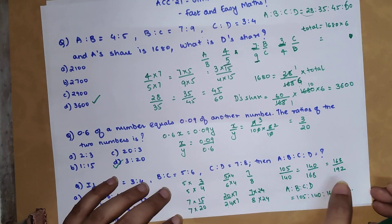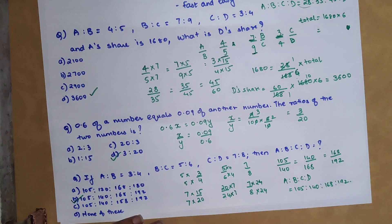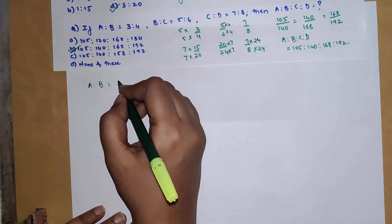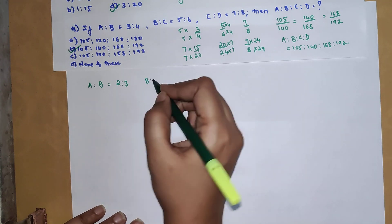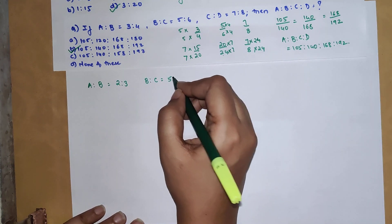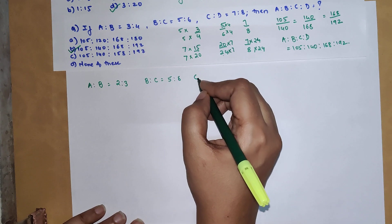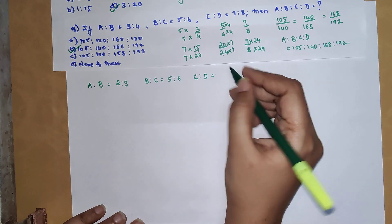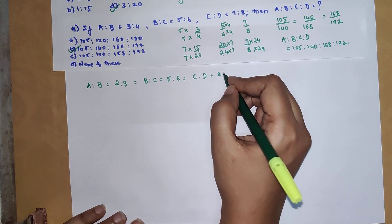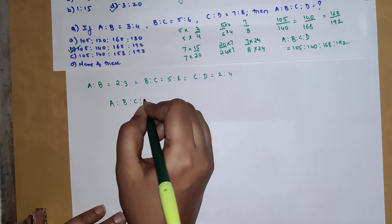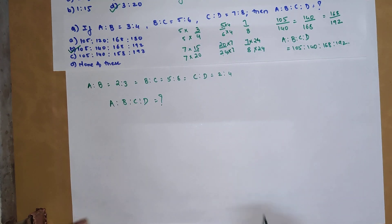Now it's time for your DIY. Find A is to B is to C is to D, given: A to B is 2 to 3, B to C is 5 to 6, and C to D is 2 to 4. I'm not giving you options — do it on your own and put your answers in the comment section. That's it for today; I'll see you in the next video.